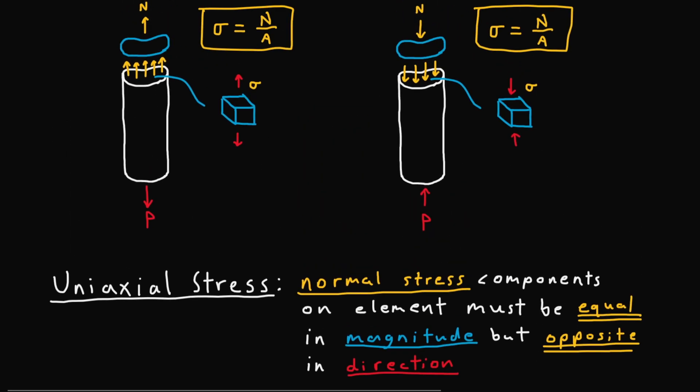Just like how we see them in this stress element above. The directions of the stress arrows are of course in the opposite direction, but they should be equal in magnitude for that equilibrium.